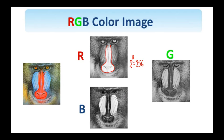On the other hand, if I look at the cheeks of the mandrill, there is a variation of blue — not exactly the blue color. So I see high values in the blue channel and relatively smaller values — definitely small in the red and somewhere in the middle in the green channel. Actually, this particular color is apparently a combination of green and blue.